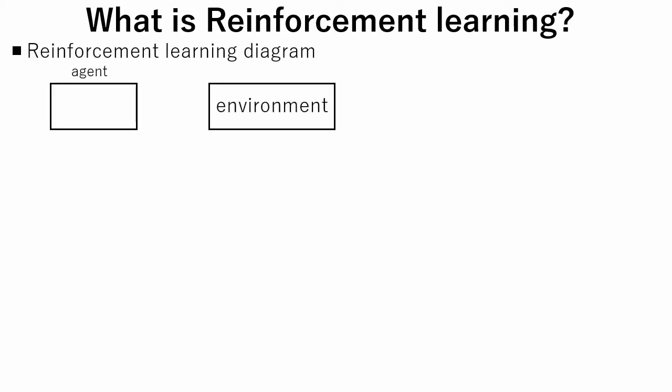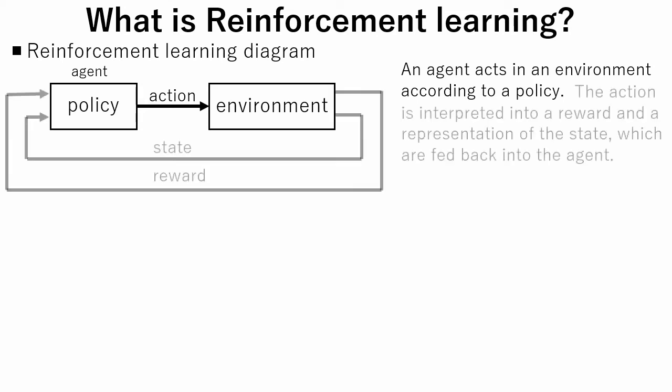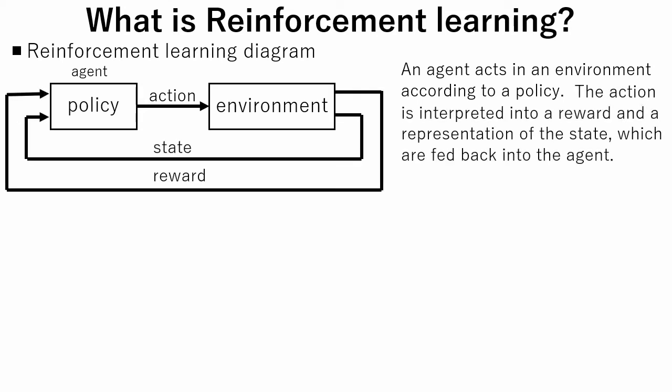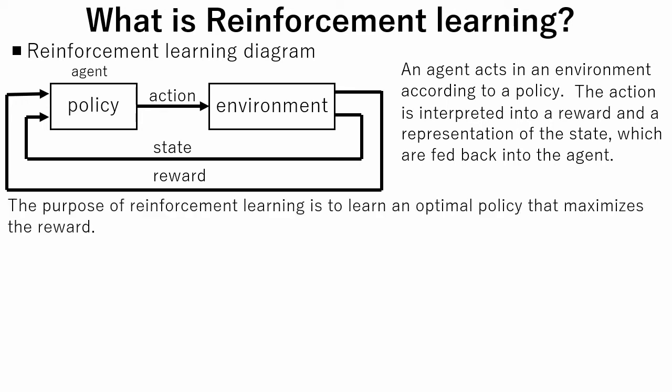We have an agent and an environment. The agent acts in the environment according to a policy. The action is interpreted into a reward and a representation of the state, which are fed back into the agent. The purpose of reinforcement learning is to learn an optimal policy that maximizes the reward.